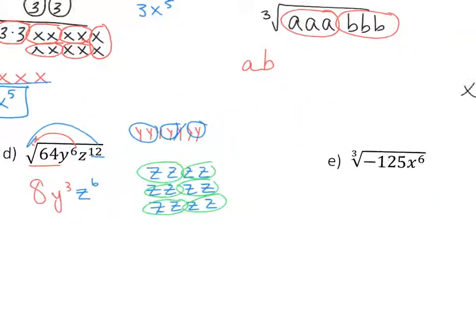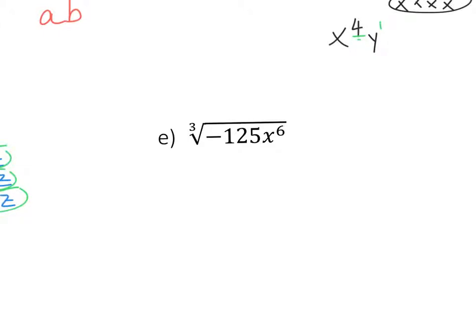And the last one — the cube root of negative 125a to the 6th. The cube root of negative 125 is negative 5, so keep the negative with it. Remember, if you have a negative number, you can take the odd root of it. And 6 divided by 3 is 2. So that's my answer. And I'll see you guys later.